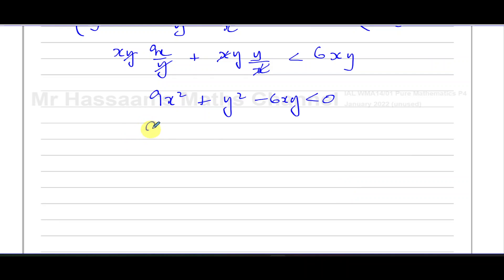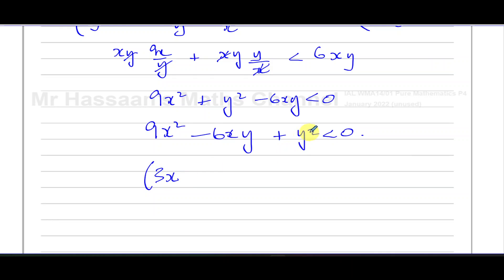If you rewrite 9x² + y² - 6xy, you should spot this as a perfect square. The first term is a square, the last term is a square, and since the middle term is negative, we write (3x - y)². Checking: (3x - y)² = 9x² - 6xy + y². Yes — so we have (3x - y)² < 0.